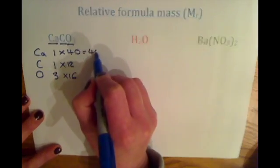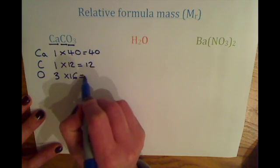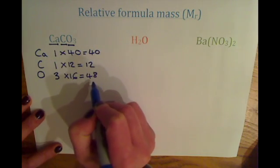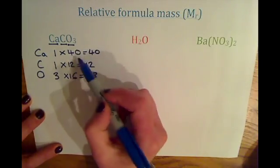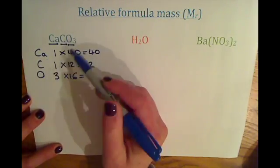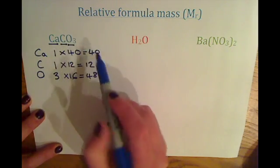So to complete these, we've got 40, 12 and 48. And all you need to do for the relative formula mass is add up these numbers. So you're adding up the calcium, the carbon and the oxygen to find out the relative formula mass of calcium carbonate.